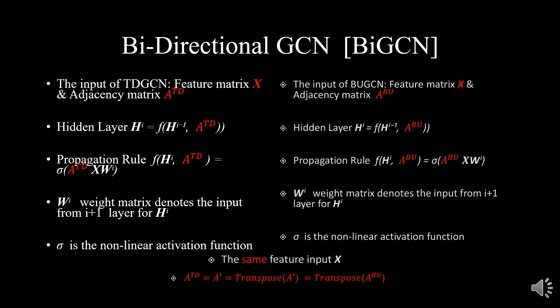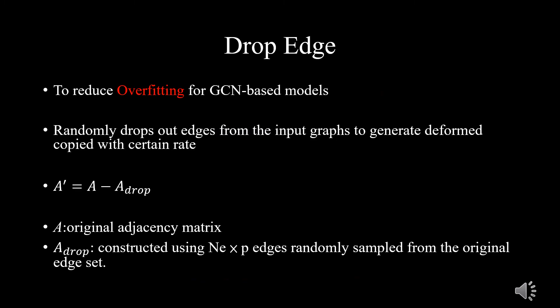The GCN model has two parts: top-down GCN and bottom-up GCN. They adopt the same input features. Input X and edges form the hidden layer, but the adjacency matrices of the two parts are different. Drop edge is a novel method to reduce overfitting for GCN-based models. In each training epoch, it randomly drops edges from the input graph to generate different deformed copies at a certain rate, augmenting the randomness and diversity of input data, similar to randomly rotating or flipping images.